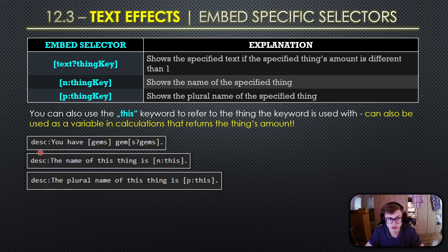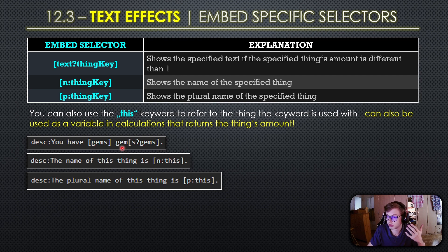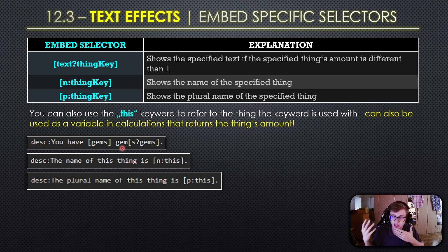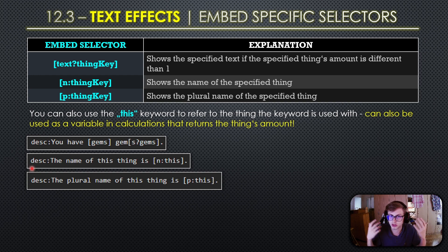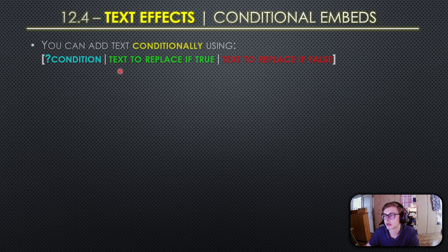Let's look at some examples. The first demonstrates the primary use of the first embed-specific selector — it ensures grammatical correctness by displaying 'gem' when the gem count is one and 'gems' when the count is different than one, avoiding the incorrect 'you have one gems.' The second example simply displays the name of the thing the embed is attached to using the 'this' keyword, and the third does the same thing except it refers to the plural form of the name.